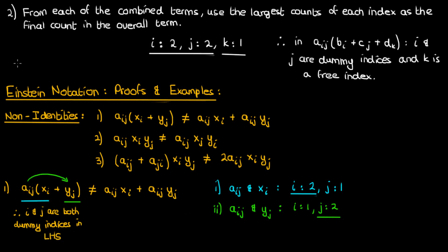However, on the right-hand side, there aren't any brackets involved, so we have to count the indices separately in each term. In the first term, i is a dummy index because it occurs twice, and j is a free index because it occurs once. In the second term, the opposite is true, so j is a dummy index while i is a free index.